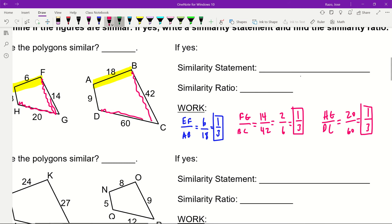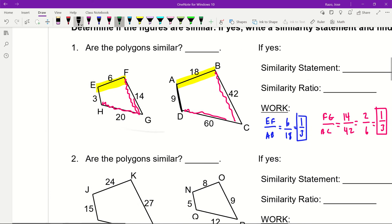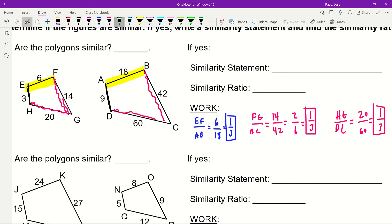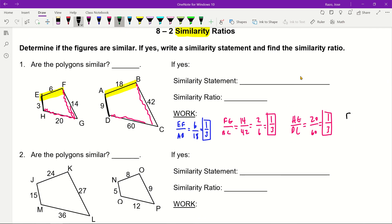The last one I have is EH over AD, which is three over nine, and that's one-third. Are these similar? Yes. This is the work you need to show.